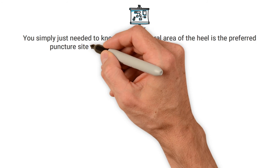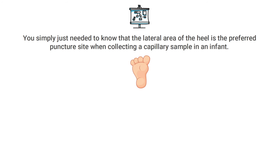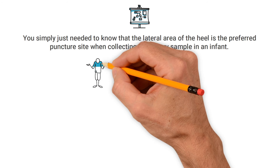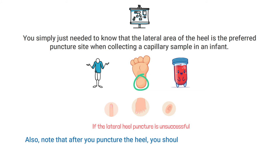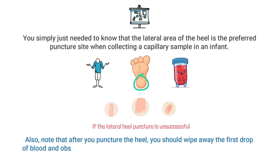To get this one correct, you simply need to know that the lateral area of the heel is the preferred puncture site when collecting a capillary sample in infants. You could potentially use the fingertip, toe, or earlobe if the lateral heel puncture is unsuccessful, but these are not the preferred sites. The heel is the preferred and typically most effective site to stick in infants.